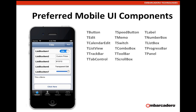FireMonkey comes with a big range of different components that you can use for application development. There's a list of components that are really the preferred ones to be used on mobile. These are the components you should use on your mobile applications because they're designed for mobile — the types of controls you commonly see in mobile apps, and they've been optimized for mobile application development.